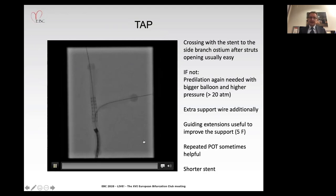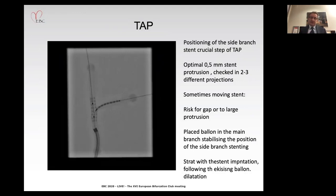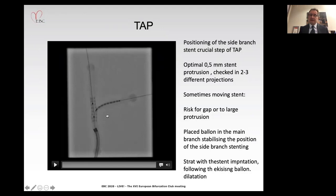Finding this optimal position is very important and very difficult. We should aim for a protrusion of the side branch stent of around 0.5 millimeter. Always verify this in two different projections. Sometimes the stent moves due to patient breathing, deep breaths, or coughing, which can cause stent dislodgement. One option to avoid this is to place a balloon in the main branch as a stabilization measure for the side branch stent.